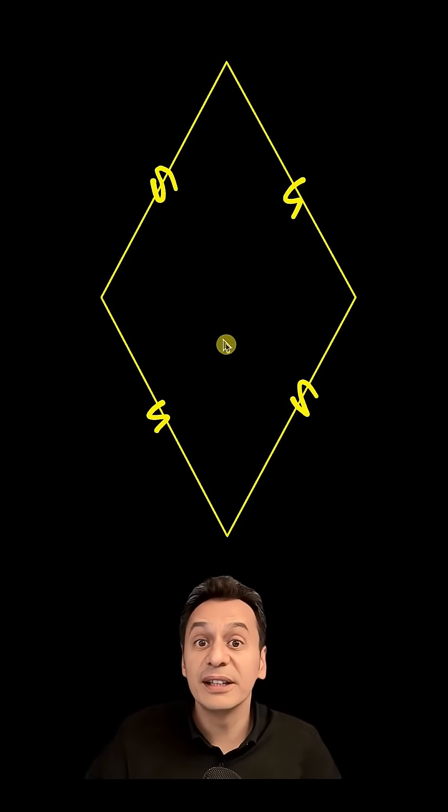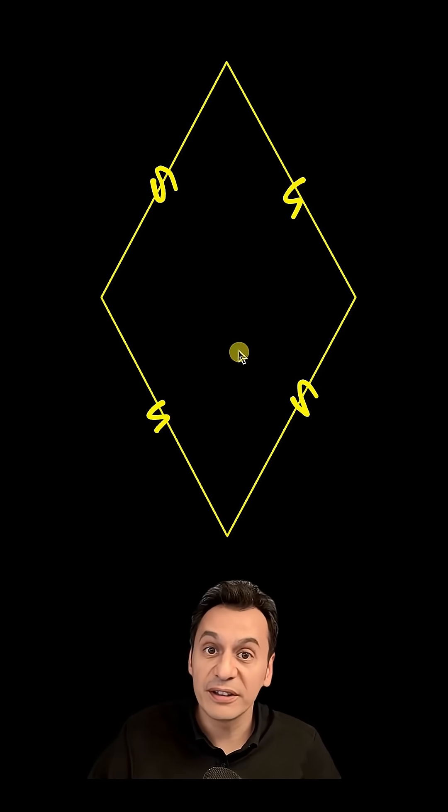In a rhombus, the diagonals bisect each other at right angles. But why is that? Let's take a look right away.